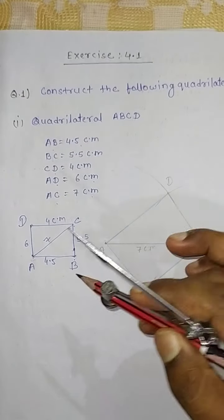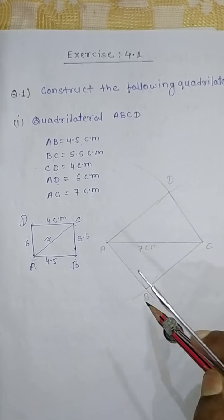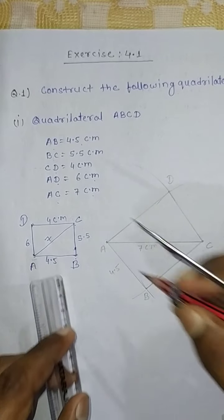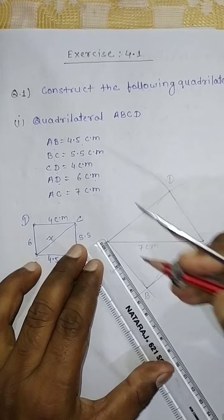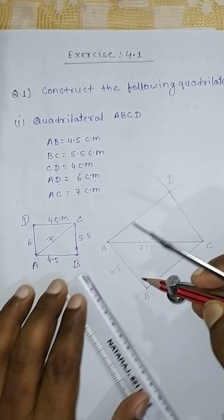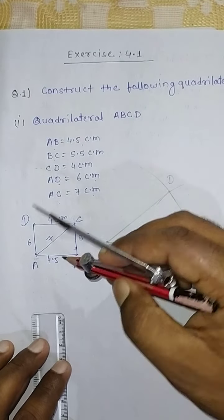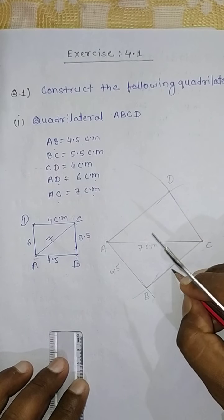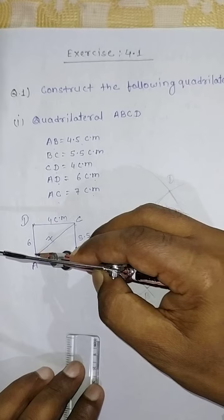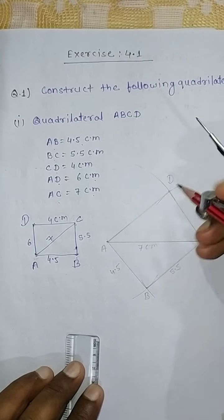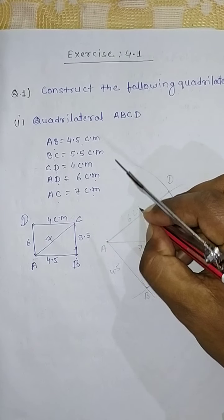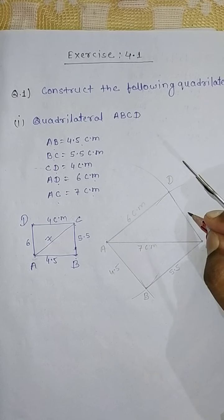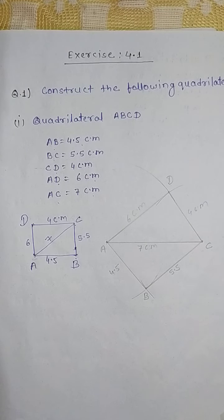We can verify by measuring: AB equals 4.5 cm — correct. Similarly, BC equals 5.5 cm, AD equals 6 cm, and CD equals 4 cm. This is the required quadrilateral.